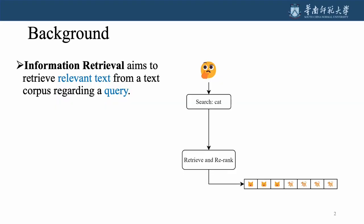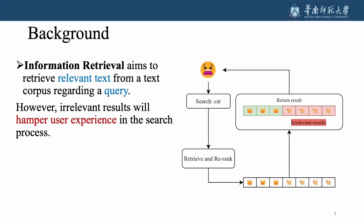Information retrieval is to retrieve texts that are relevant to a query. However, relevant results are inundated with vast sheer data, and irrelevant results will hamper user experience in the search process.